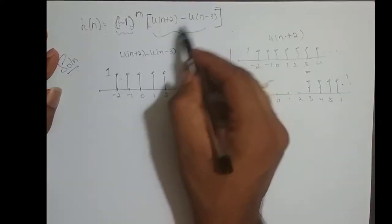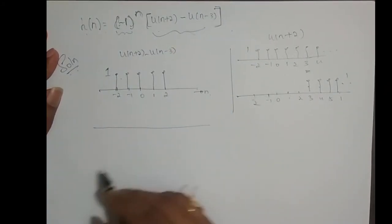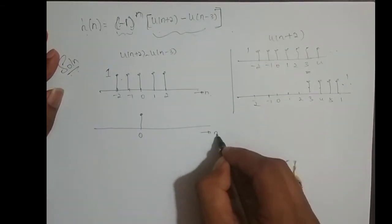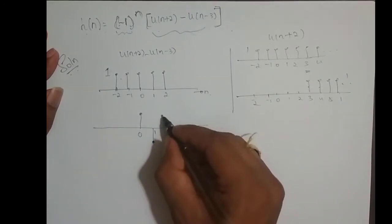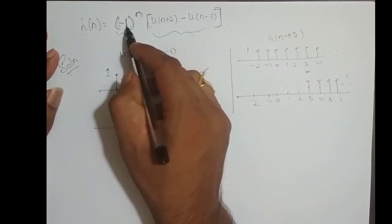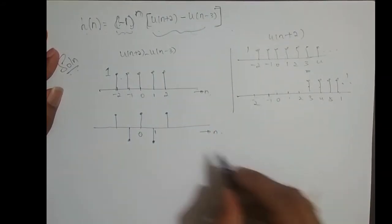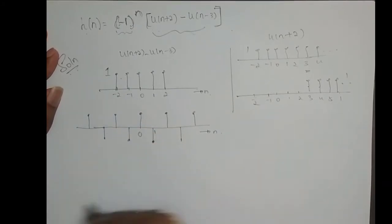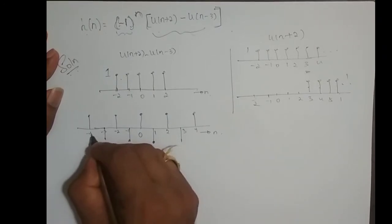So this rectangular signal is multiplied with (-1)^n. How does (-1)^n look? When n equals 0, (-1)^0 is 1. At n equals 1, (-1)^1 is minus 1. At n equals 2, (-1)^2 is 1. So every odd value of n gives minus 1, and every even value of n gives 1. So the sequence alternates: minus 1, 1, minus 1, 1, minus 1, 1, going on forever in both directions.